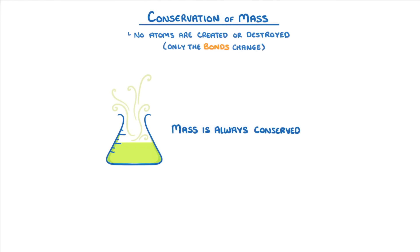One of the most important concepts in chemistry is the idea of conservation of mass, which means that in a chemical reaction, mass is always conserved. In other words, no atoms are created or destroyed, it's only the bonds between atoms that change.